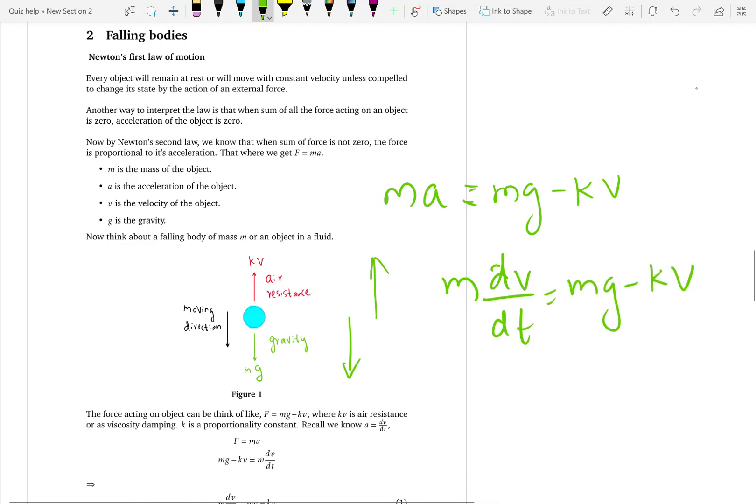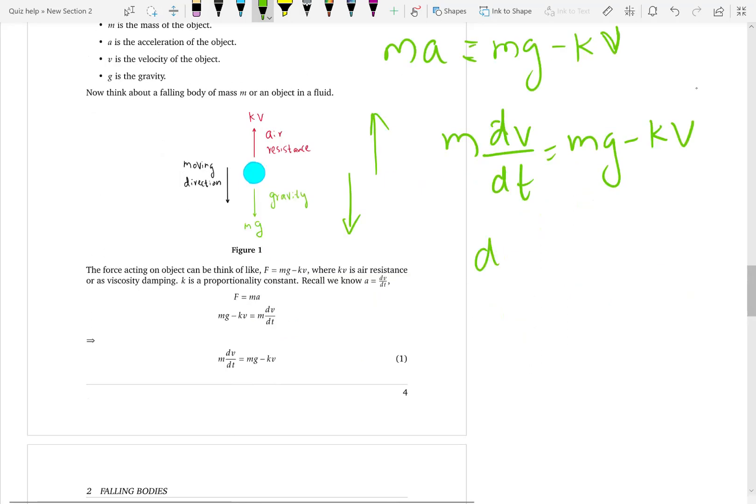Now we can divide by M and we get a new differential equation. If we divide each term by M, dV/dt equals g minus Kv over M.